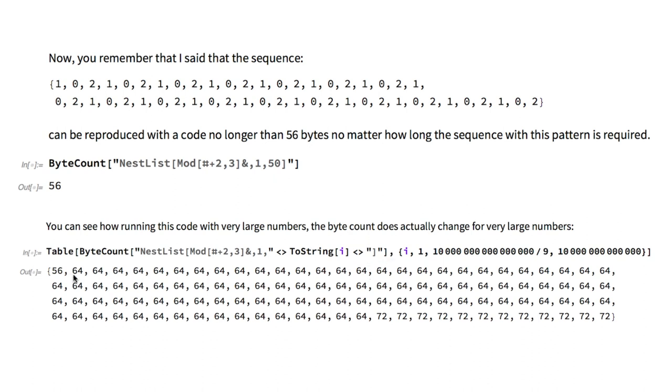In fact, classical information theory tells us that we can encode an integer n in about log of n bits, because remember we can always guess a number in about log of n yes and no answers or questions. You can see how running this code with very large numbers the byte count does actually change for very large numbers.